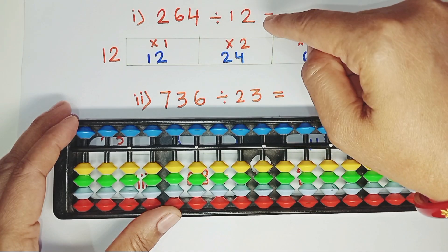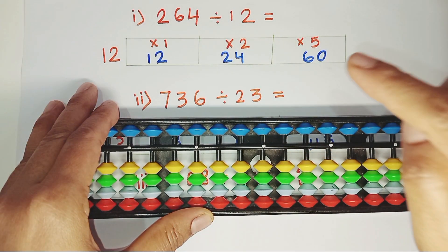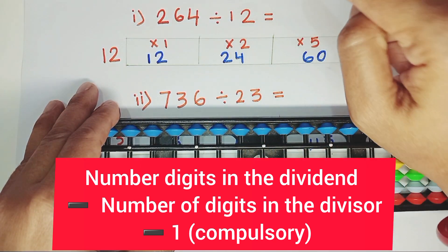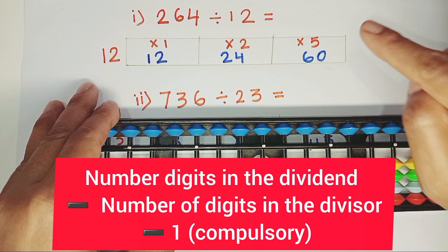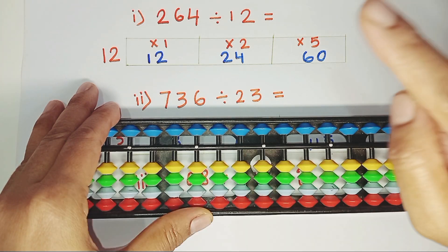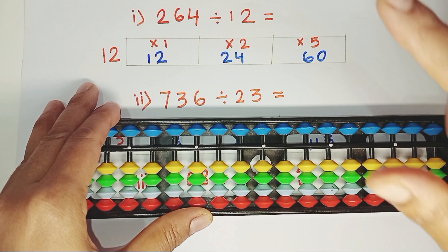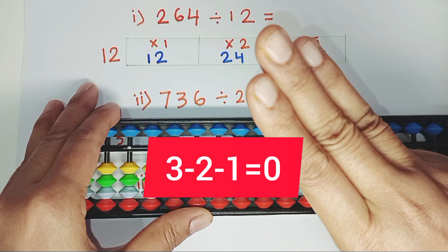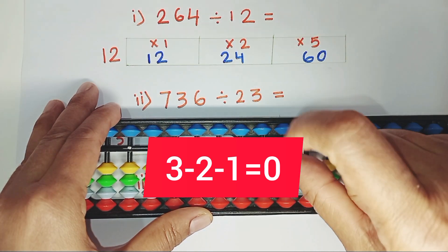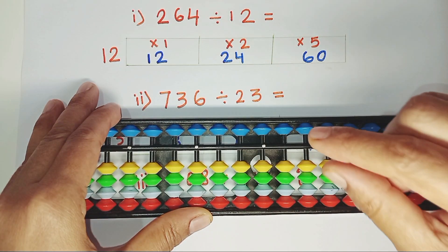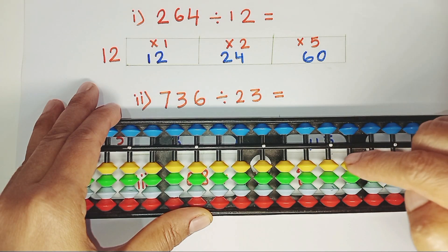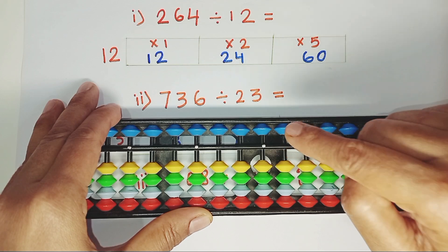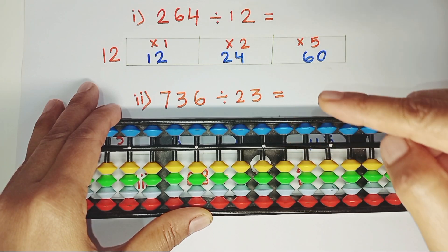264 divided by 12. The Abacus division rule to place the dividend is: number of digits in the dividend minus number of digits in the divisor minus 1. Here, 3 minus 2 minus 1 equals 0. So we will start placing the actual sum or dividend from the 0 rod. This is our home point or first rod. Move right, you will get the 0 rod from where you have to place the actual sum or dividend.